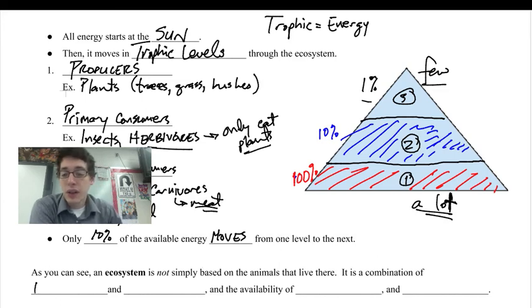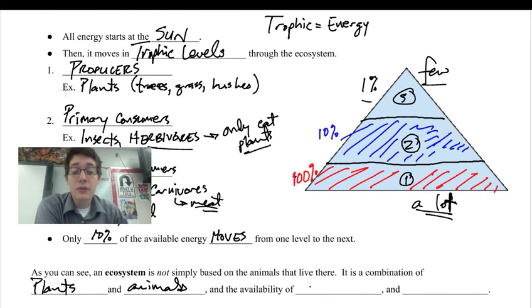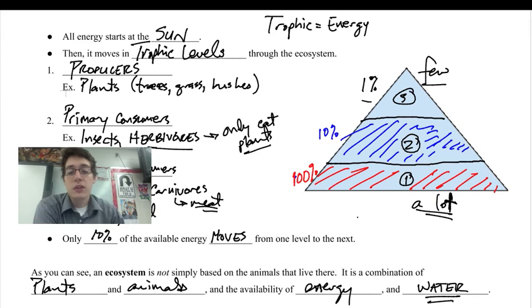It is a combination of plants and animals and the availability of energy and water especially. Again, we're going to go back to that water. So we're looking at an ecosystem. It is a combination of the plants and the animals, the organisms that live there, but it's also the availability of energy. So the more producers you have, the more energy is available, and the higher we can go on this trophic scale and water. If there's no water, this doesn't even begin to take shape because there's no way any of those nutrients can be carried throughout the animal's body.